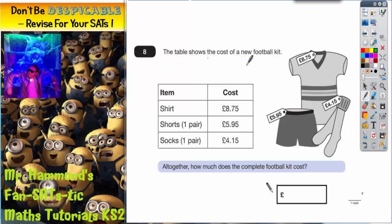Question 8 is all about buying a new football kit. We've got a shirt, we've got some shorts, we've got some socks. These prices that are on the tags are the same prices that's in the table. And the question is, altogether, how much does the complete football kit cost?